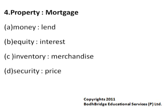Property is to Mortgage. The options are: Money is to Lend, Equity is to Interest, Inventory is to Merchandise, and Security is to Price. Property is something that someone owns — people mortgage their property in return for money. So this relationship exists in option A, Money is to Lend. And that's the correct answer.